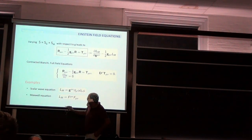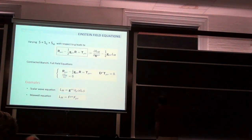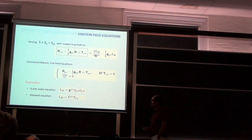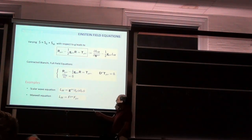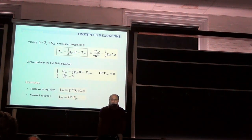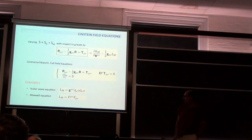Similarly, for the Maxwell equations, the Maxwell Lagrangian depends on a two-form F — an anti-symmetric tensor. You take the contraction of F with itself, which gives another scalar, and that is the Lagrangian of the Maxwell equation.